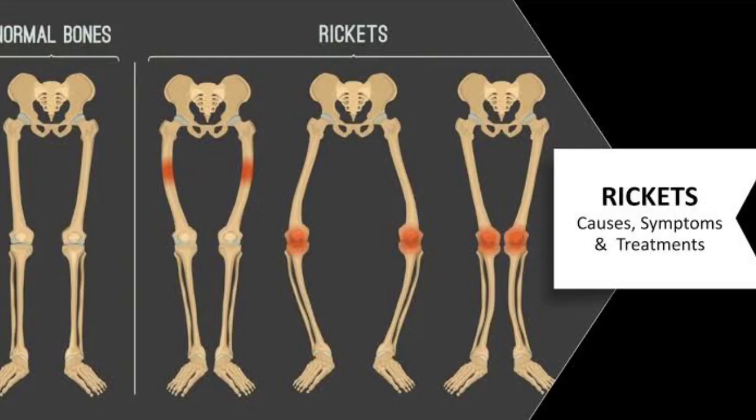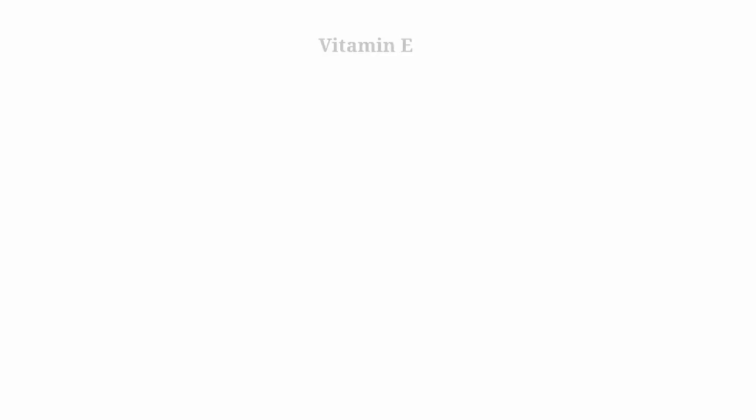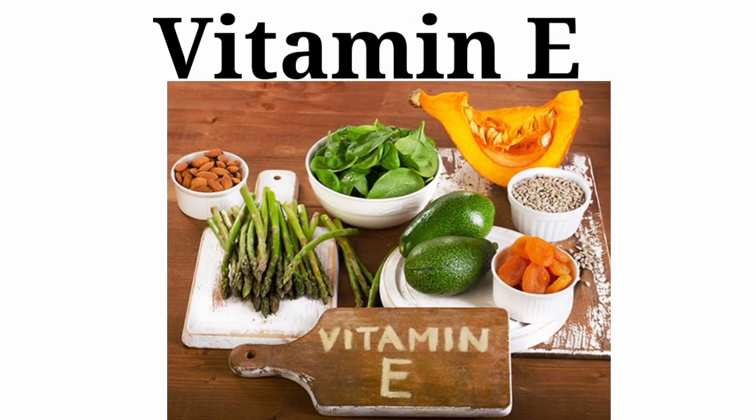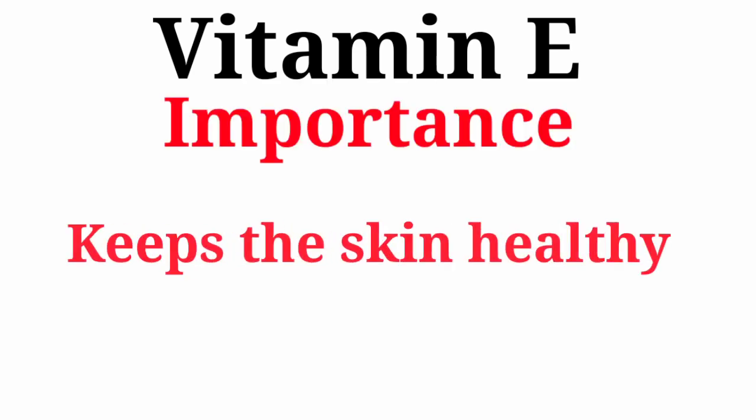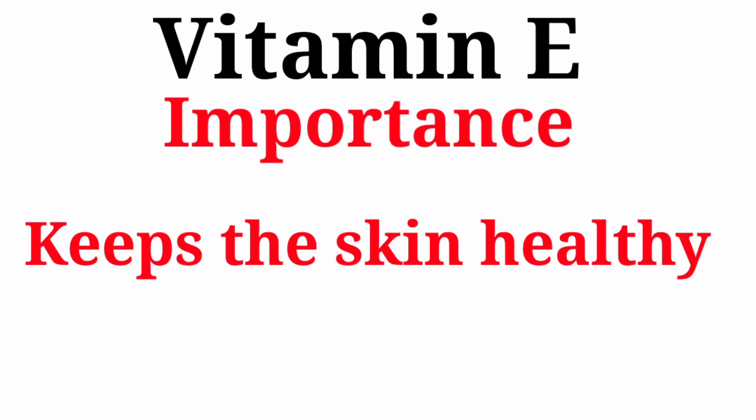The deficiency disease of vitamin D is rickets, which causes soft bones. Vitamin E: the main food sources are nuts like almonds, eggs, wheat, vegetable oils, and green leafy vegetables. The importance of vitamin E is that it keeps the skin healthy.